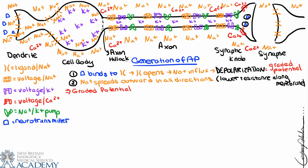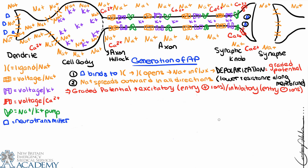A couple of points about graded potential: a graded potential can be excitatory, which means we have entry of positive ions, or it can be inhibitory, which means we have entry of negative ions. In this drawing, we're showing an excitatory graded potential.